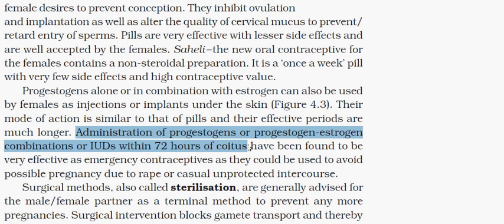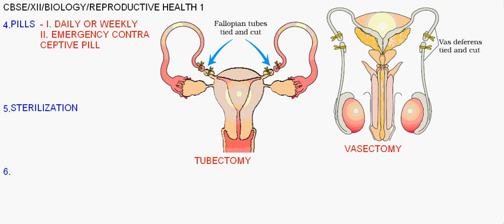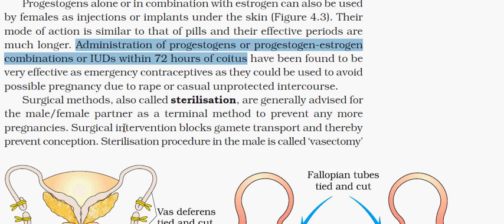The final method is sterilization, which refers to surgical methods. There are two types depending on the gender: tubectomy for females and vasectomy for males. This is considered a terminal method because once applied, there will be no more pregnancies. These methods block gamete transport and thereby prevent conception.